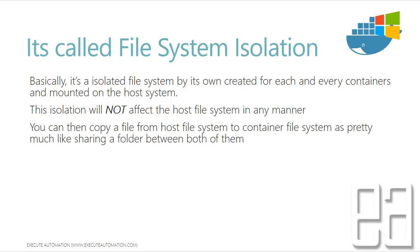Those directories are actually coming from that particular disk, so it's called file system isolation. File system isolation is basically an isolated file system of its own, created for each and every container, mounted on the host system controller as you can see here. This isolation will not affect the host file system in any manner, but it uses the same file system technology of the host system.